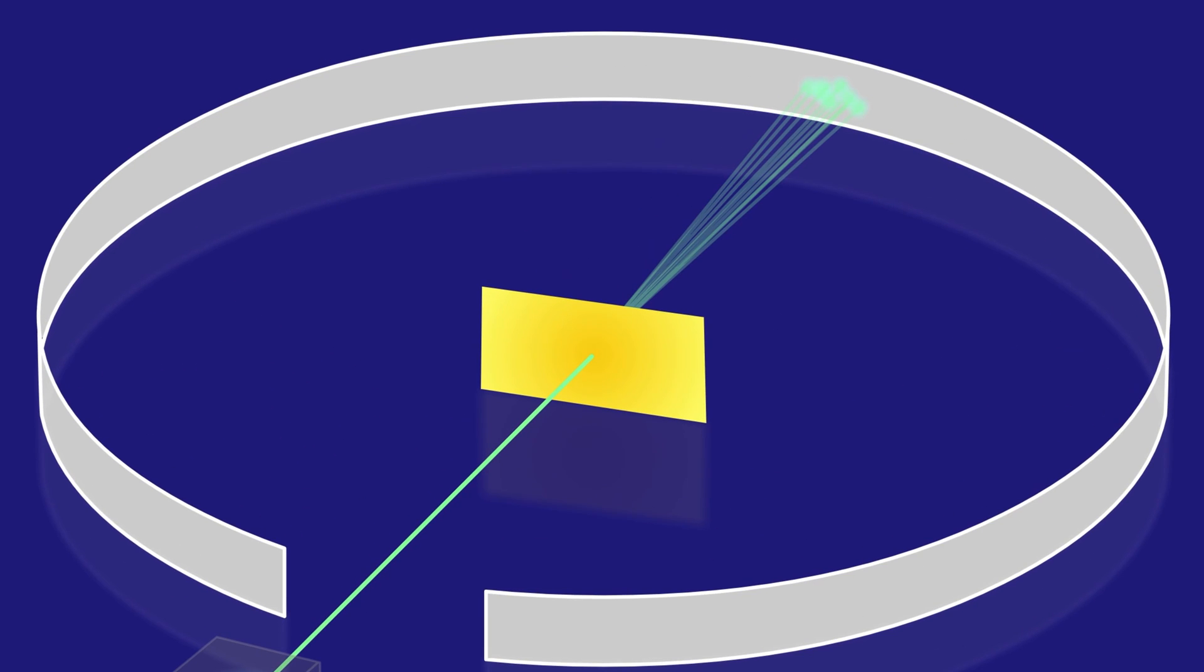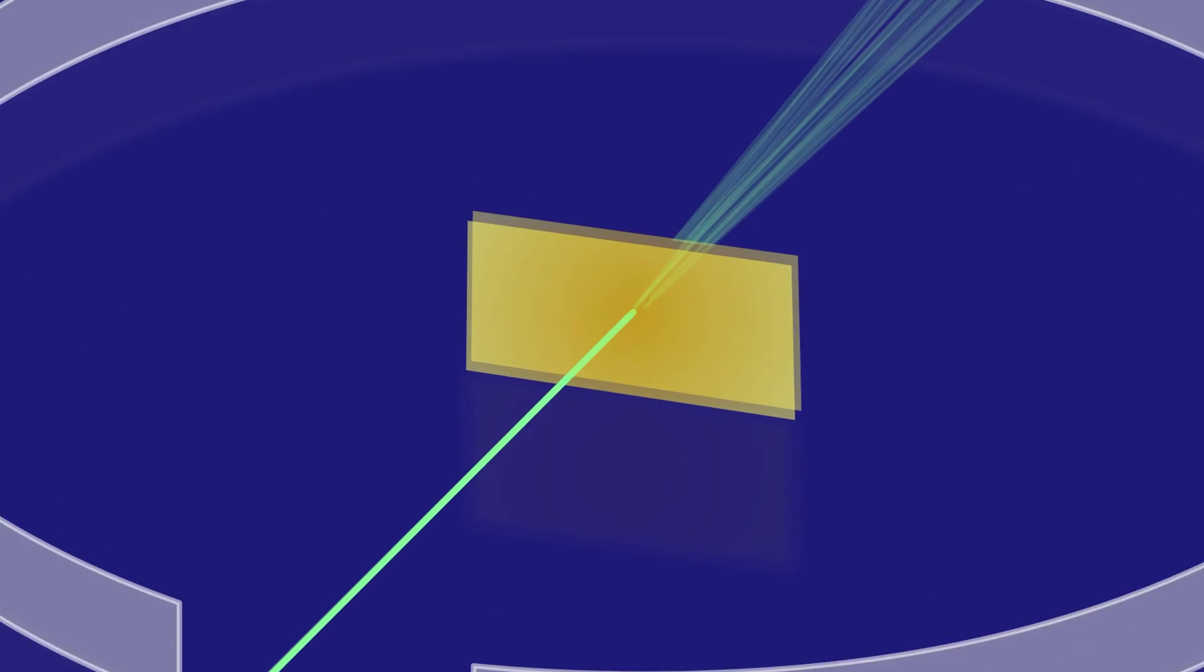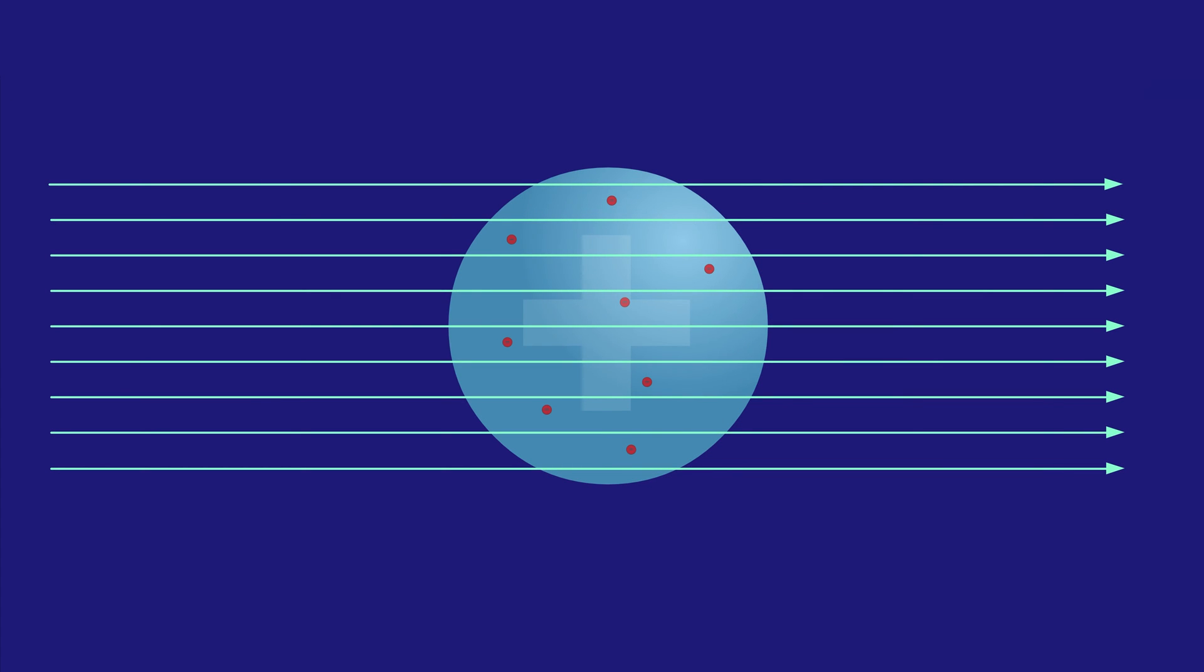Because of Thomson's model, Rutherford expected that the particles would pass straight through the foil with little deviation. There should be nothing to stop the particles from passing straight through the positive jelly-like sphere.